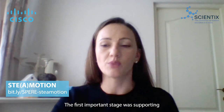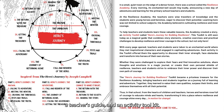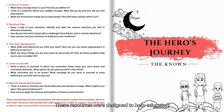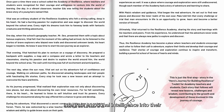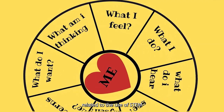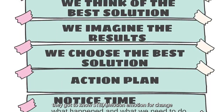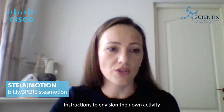The first important stage was supporting teachers' professional development through a training course, a handbook, a teacher's guide and an activity toolkit. These resources were designed to help educators integrate emotional intelligence into their STEAM teaching practices. Then, to explore practical examples related to the use of STEM through the lens of emotional intelligence, they got to know STEAM Motion, Emotion for Change learning scenarios and instructions to envision their own activity and put it into practice.